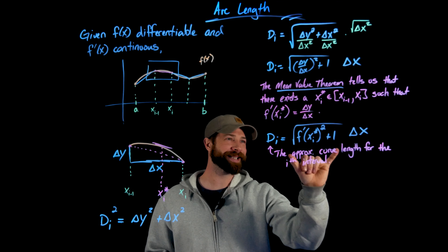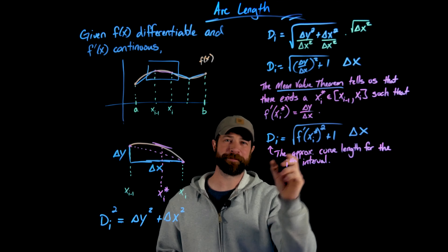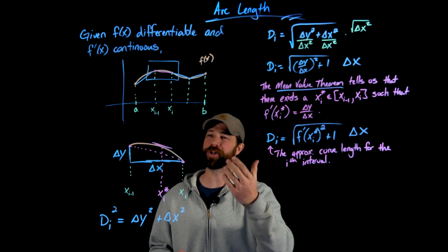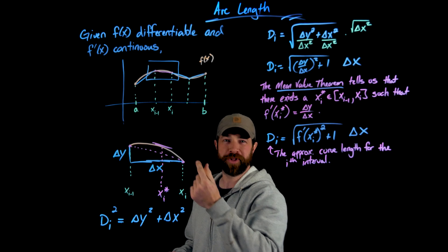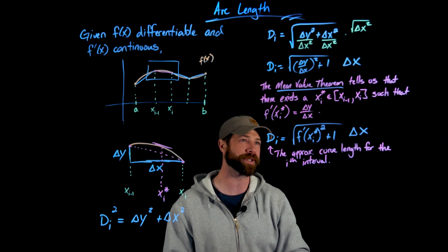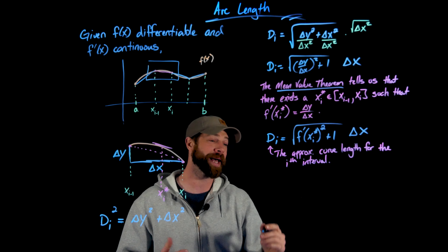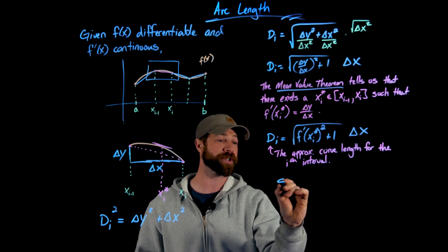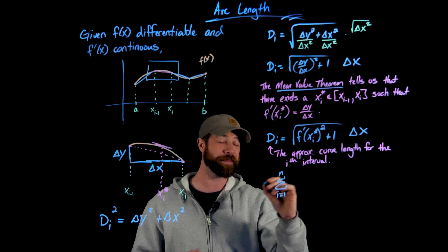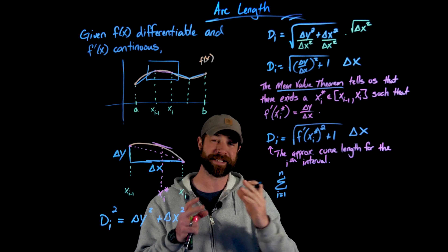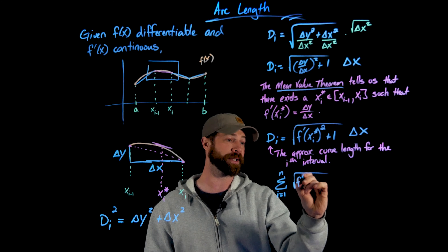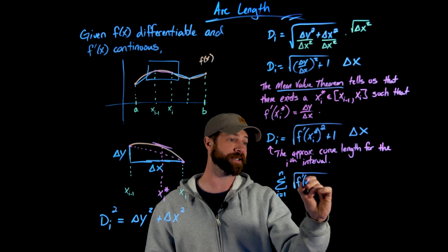This statement approximates the distance on the curve for our ith interval. When we have a few intervals it's a bad approximation, but the more we get, the better. So if we take the summation of these lengths over the entire interval for however many n sub-intervals we choose, we sum up all these little lengths, which gives us an approximation.